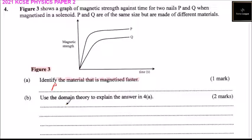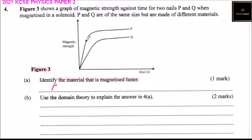Part B: use the domain theory to explain the answer in 4A. P is made up of soft magnetic material compared to Q, so it takes less time for the magnetic dipoles to align themselves in the north-south direction until it reaches magnetic saturation. P is a soft magnetic material.